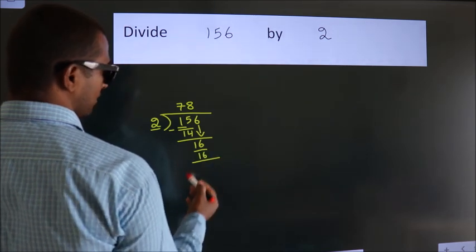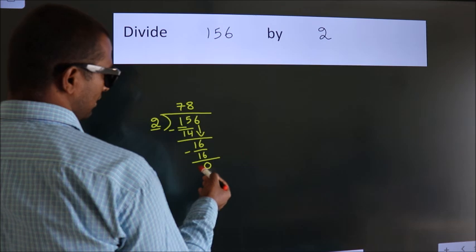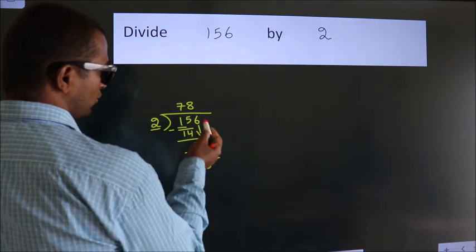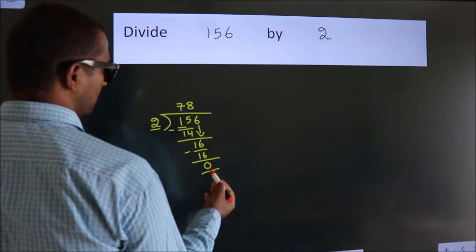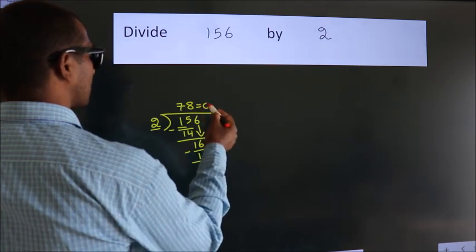Now we subtract and get 0. After this, no more numbers to bring down. We got remainder 0, so this is our quotient.